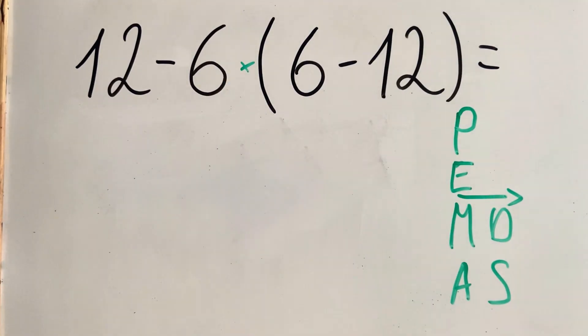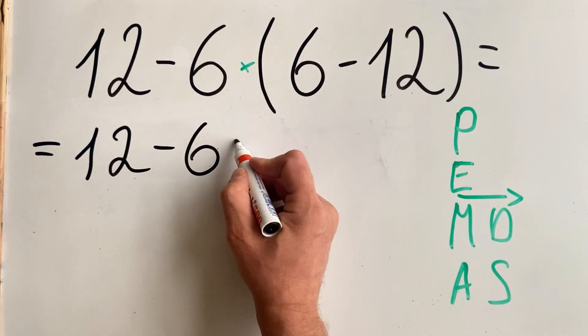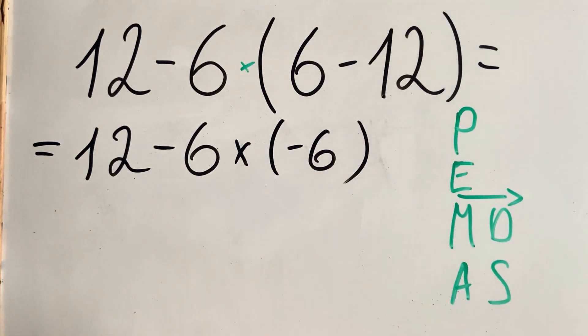And now the other way around. What we get is 12 minus 6 multiplied by minus 6, because 6 minus 12 is minus 6.